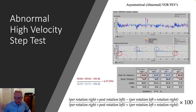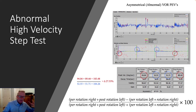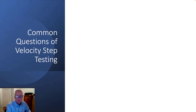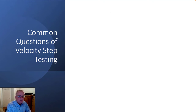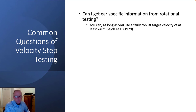By saturating the trailing ear, the nystagmus response only reflects that of the leading ear. So we can compare the leading right ear and then the leading left ear — right versus left — and we get that comparison data. Some common questions that often come up during velocity step testing: can I get ear-specific information from rotational testing?